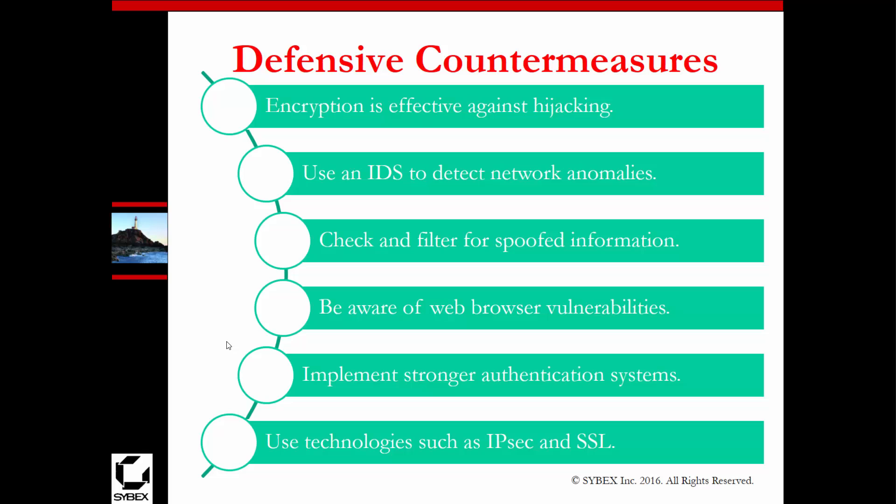For defense: use strong encryption, and deploy IDSs and IPSs. Filter out spoofed information. If you're worried about ARP, you can do deep packet inspection. Use secure DNS so you're only using appropriate DNS servers. Technologies such as IPSec and SSL can help mitigate these attacks, though they are not 100% effective — they are good ways to help mitigate but not a complete solution.